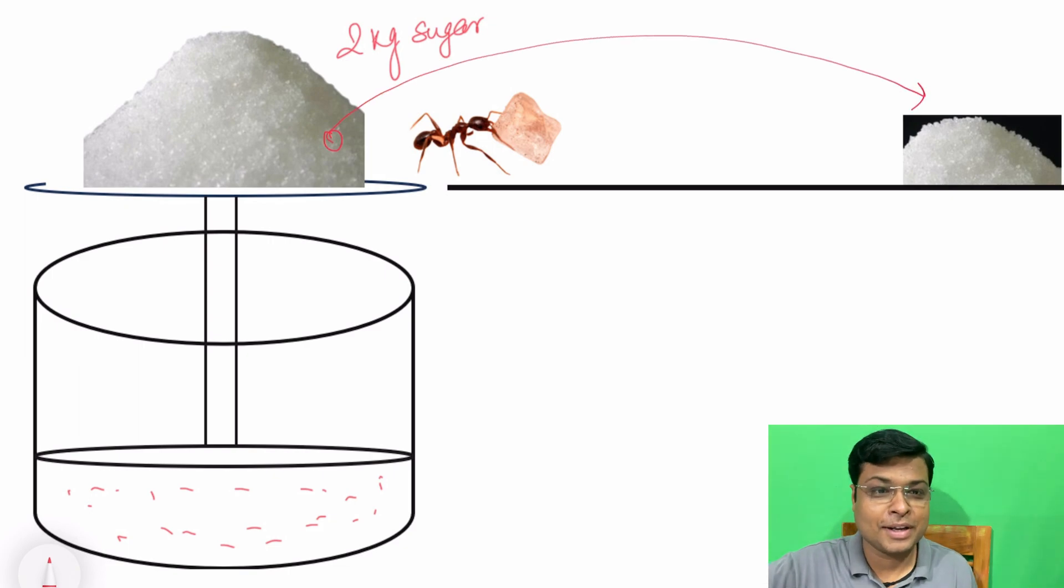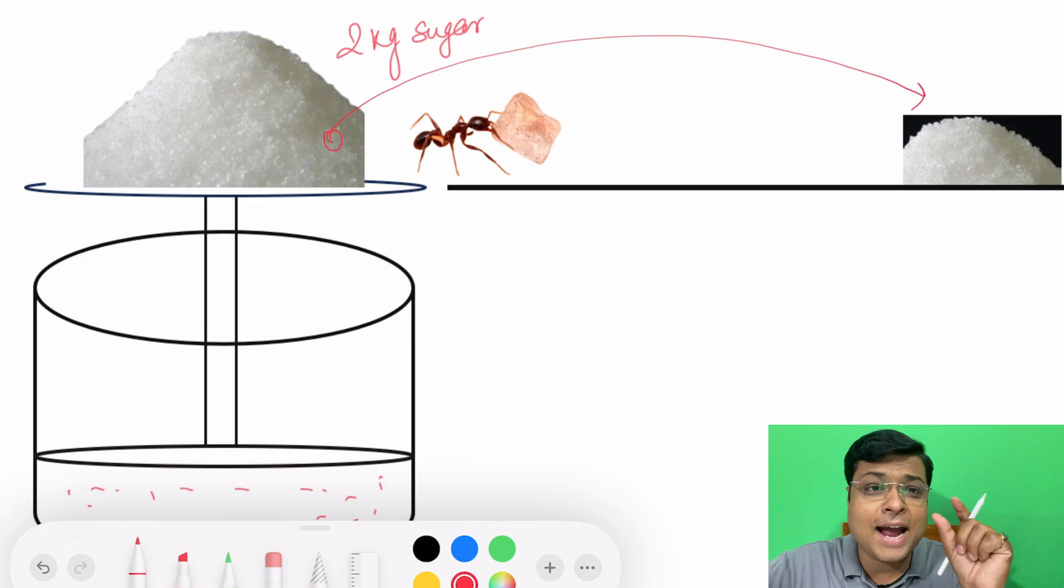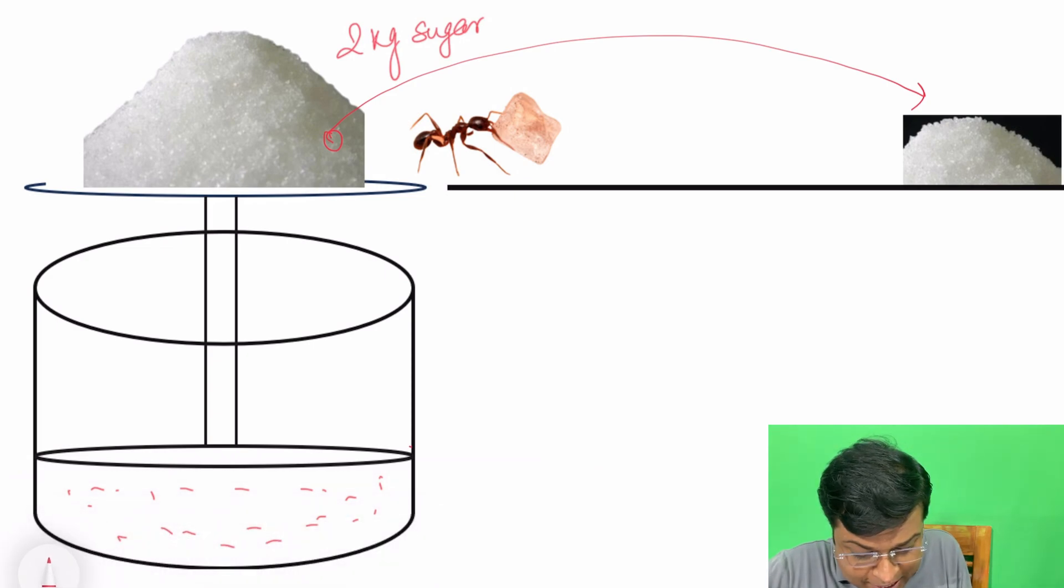It lifts one crystal of sugar, just one particle of sugar, and it transports that from this point to this point. So when ant removes first particle of sugar from this point, then this piston will slightly move from this point to this point, for example, because pressure will slightly reduce and volume will slightly increase.